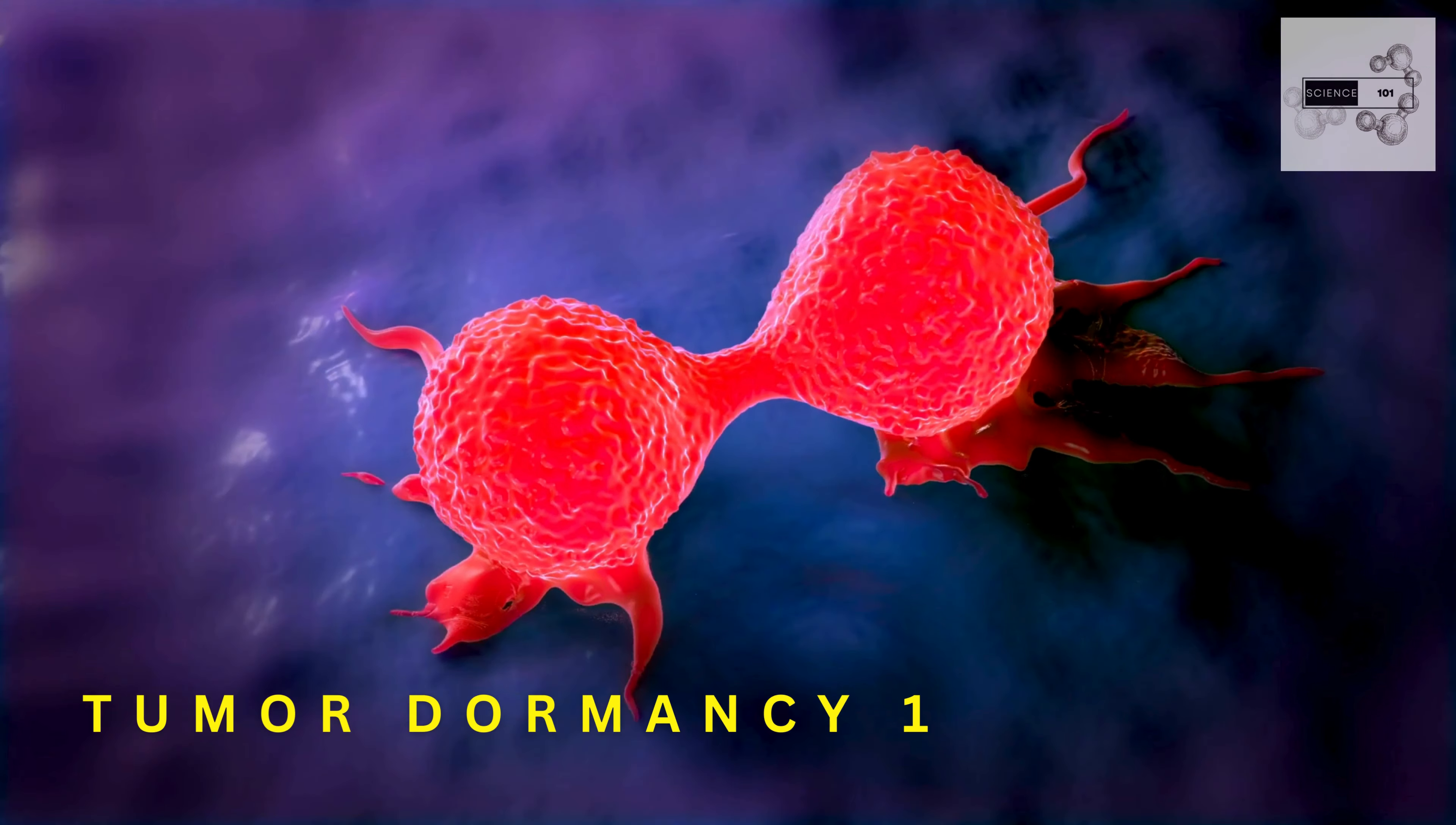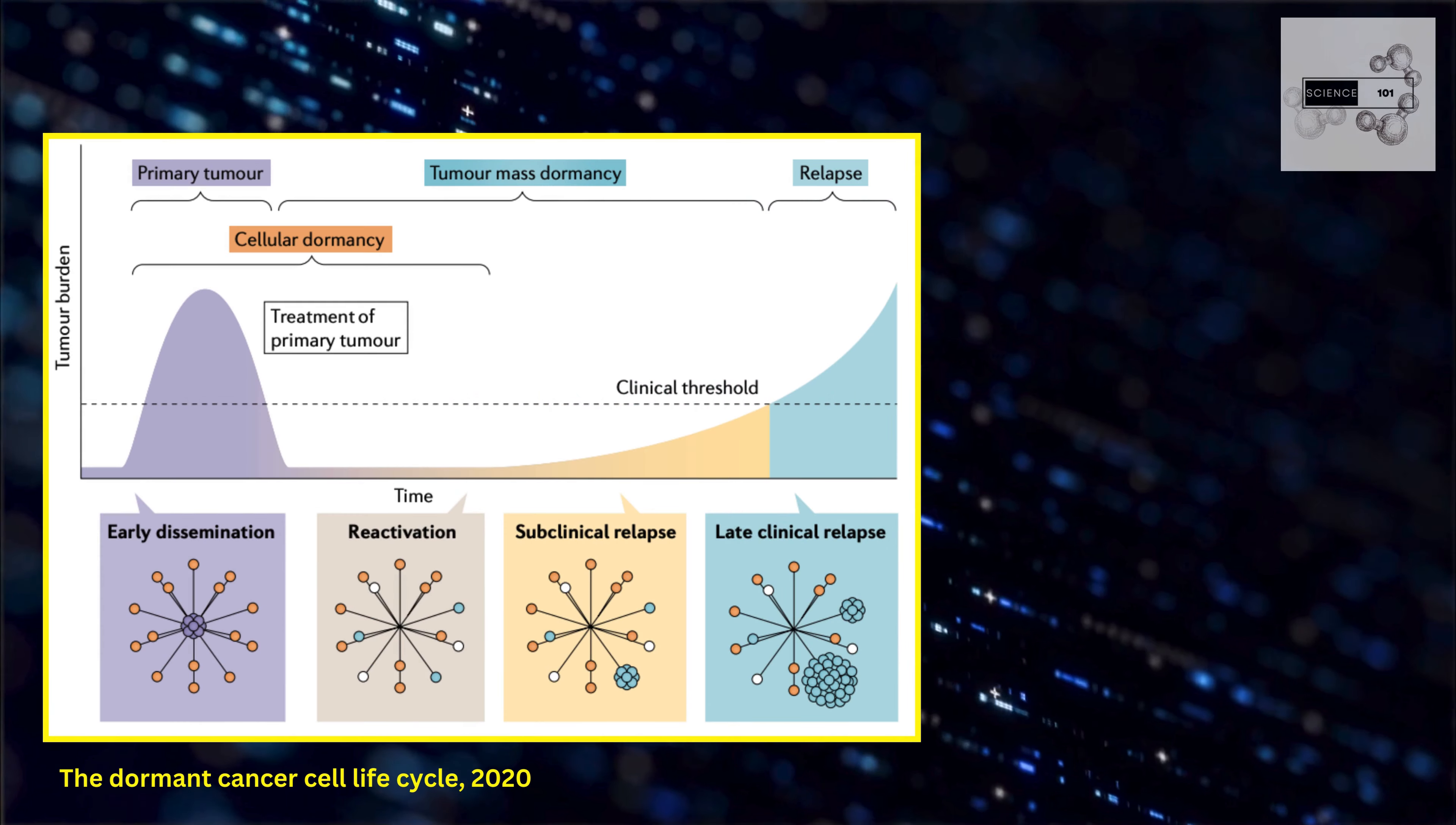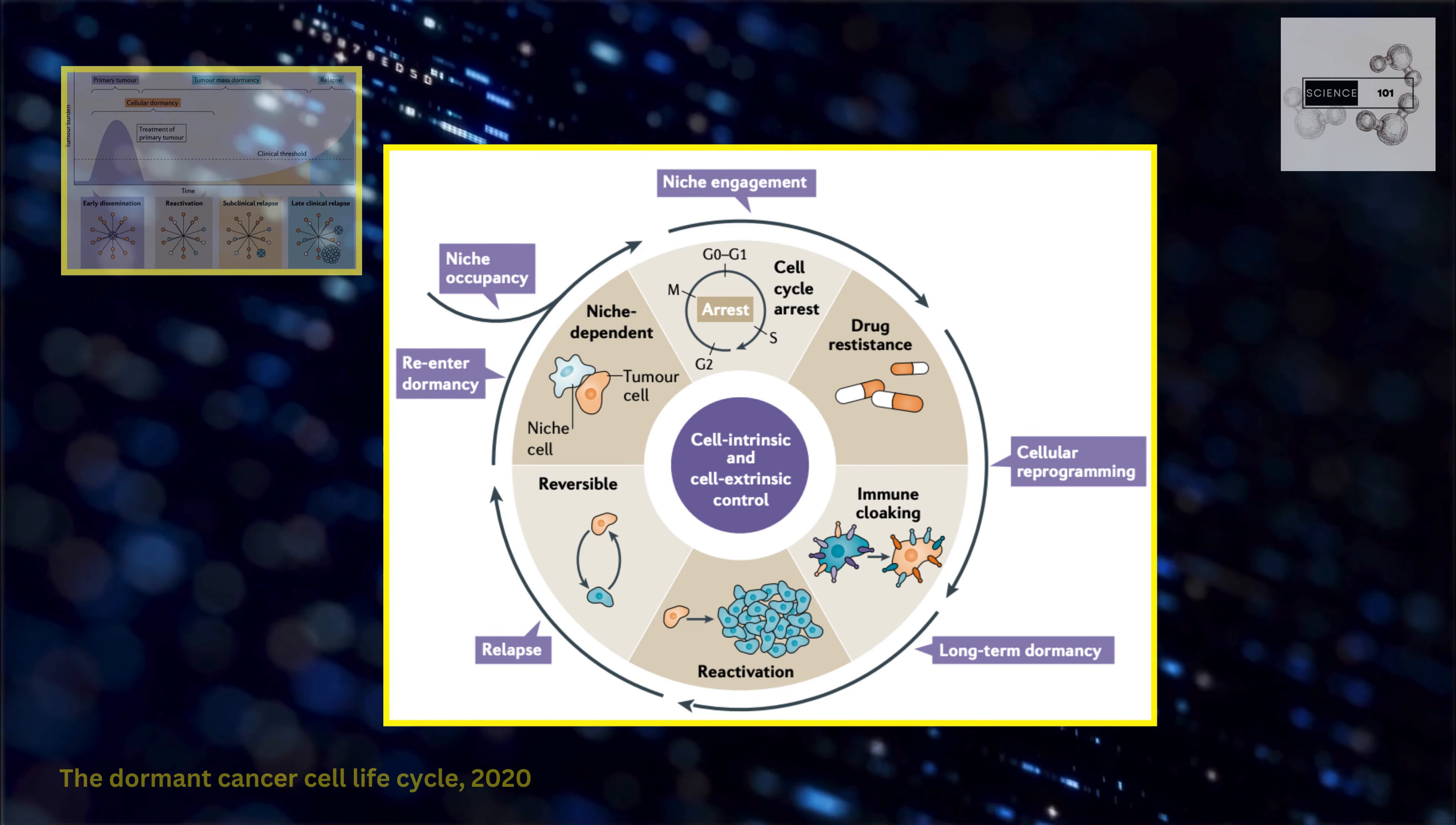Cancer, a relentless enemy hijacking our cells and multiplying out of control. But what if this relentless foe has a hidden strategy? Deep within tumors, a curious phenomenon unfolds. Some cancer cells enter a state of dormancy, seemingly putting their growth on hold.